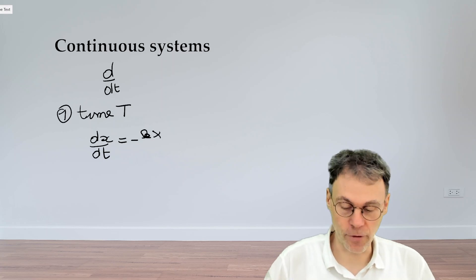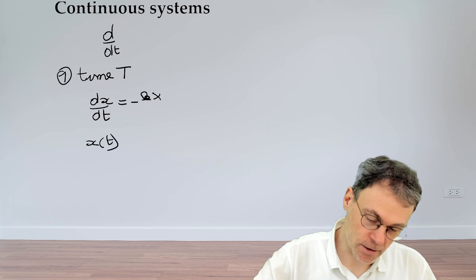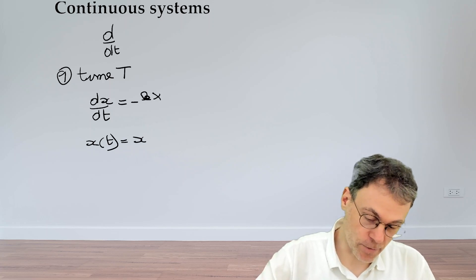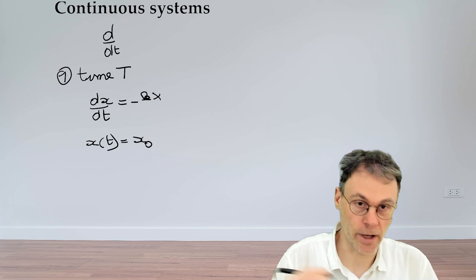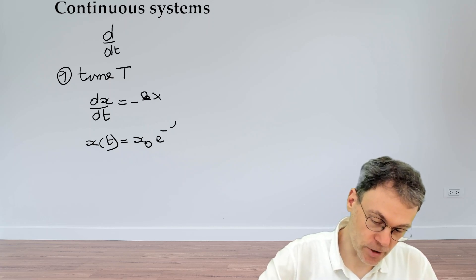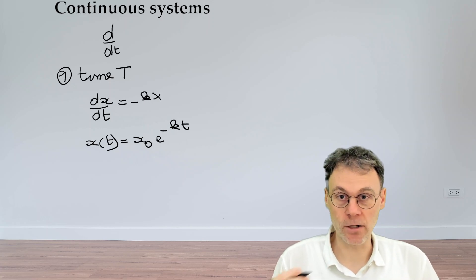Very simple differential equation where you can write down the solution as follows: the time evolution of x is given by some sort of initial condition at t0, which we call x0, and then you just have exponential decay.